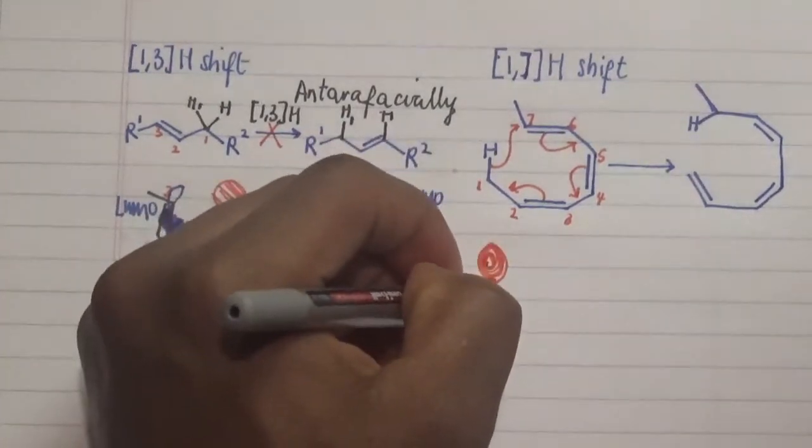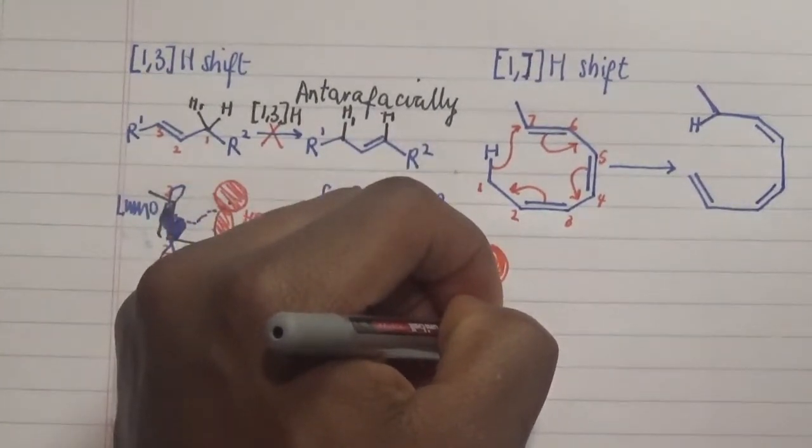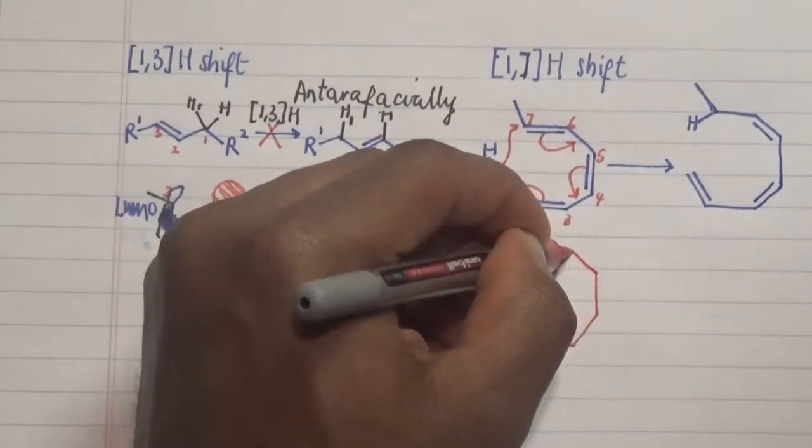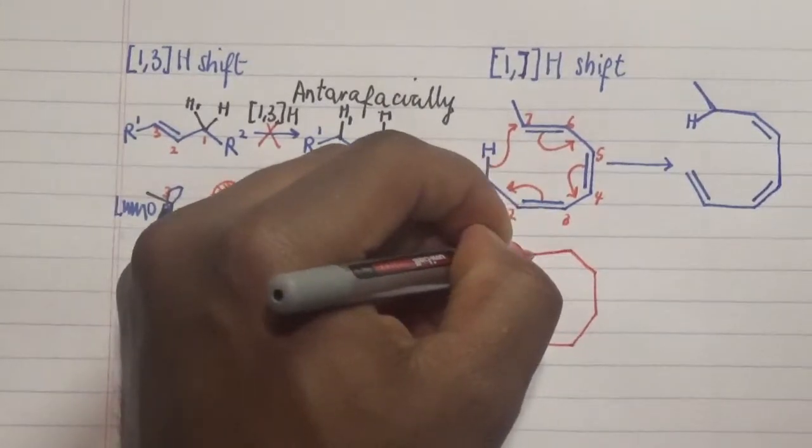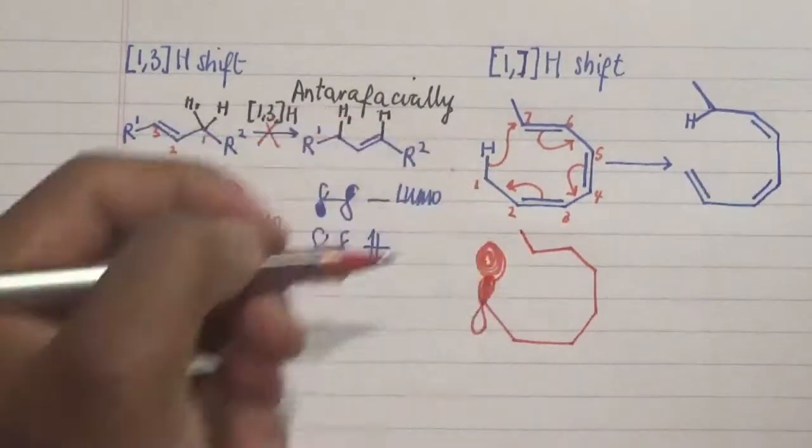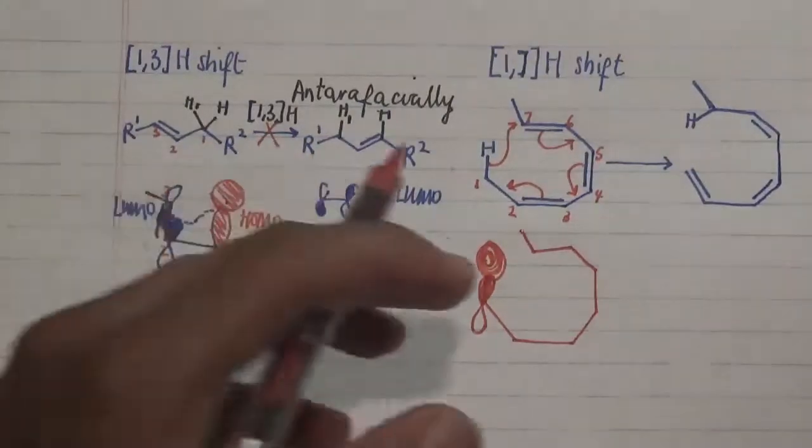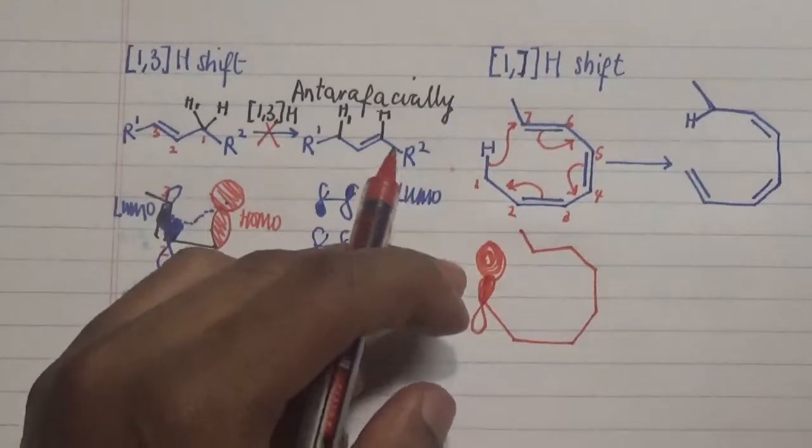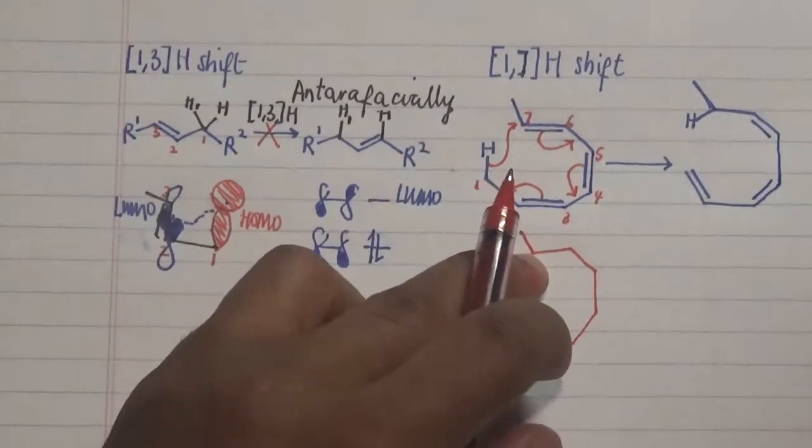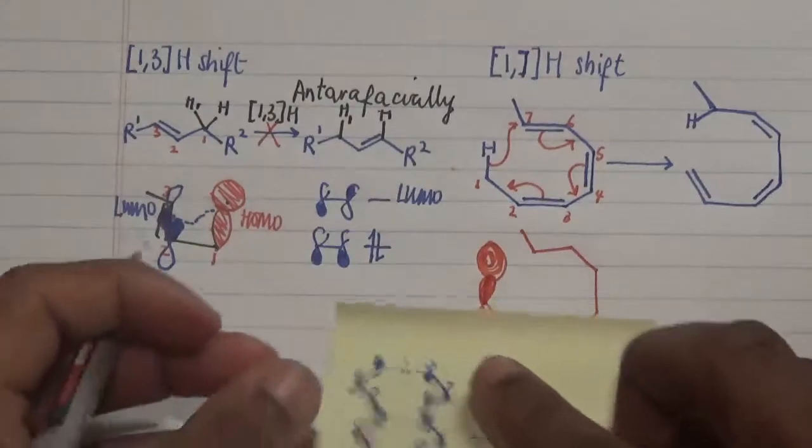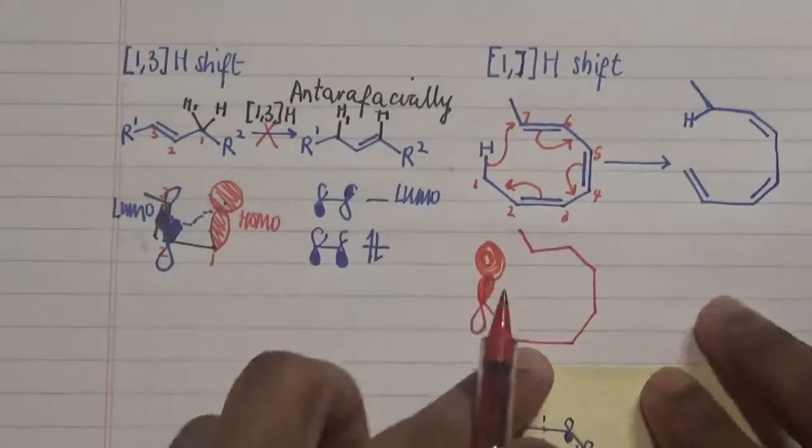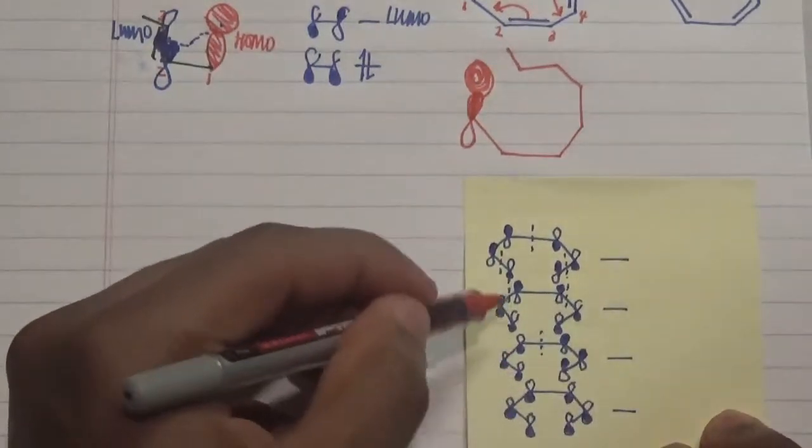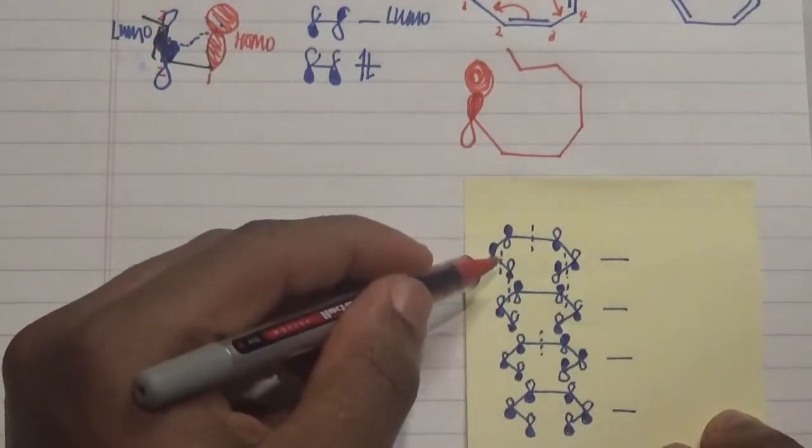Now what happens is that the other 6 carbons will be able to actually look at the molecular orbital possibilities to see where the LUMO is actually positioned at and then we can determine how the 1s hydrogen will actually move either superficial or antarafacial to the carbon 7. So if you look at this particular diagram here, this particular diagram shows the first 4 molecular orbitals combinations.